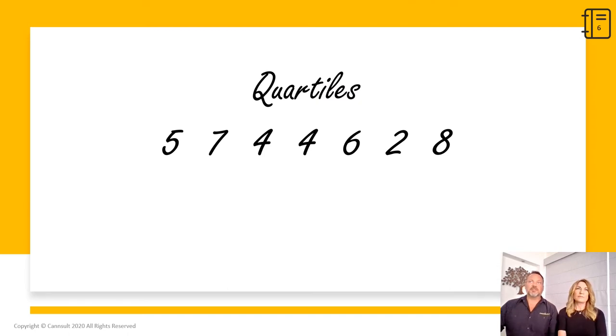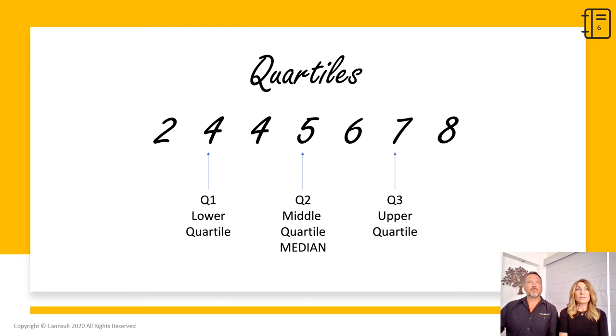Before we get to our next chart, we need to cover a few mathematical definitions. First is quartiles. Quartiles are the values that divide a list of numbers into quarters. We have a simple example data set here. To define the quartiles, the first step is to put these numbers in order from lowest to highest. The next step is to cut the list into four equal parts. The quartiles are the cuts. So the result is that quartile one is four, quartile two, which is also the median, is five, quartile three is seven.